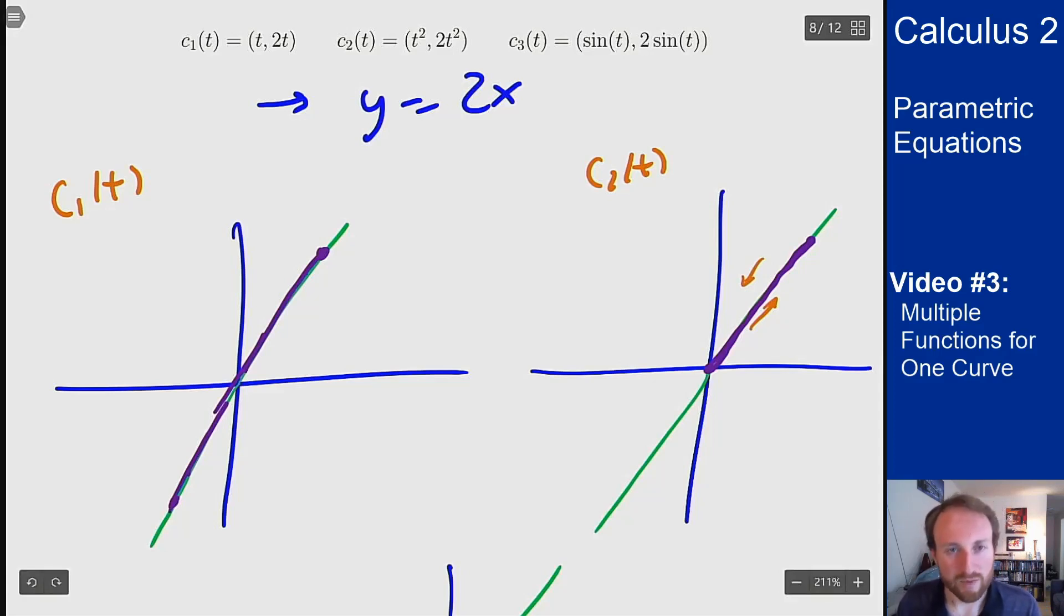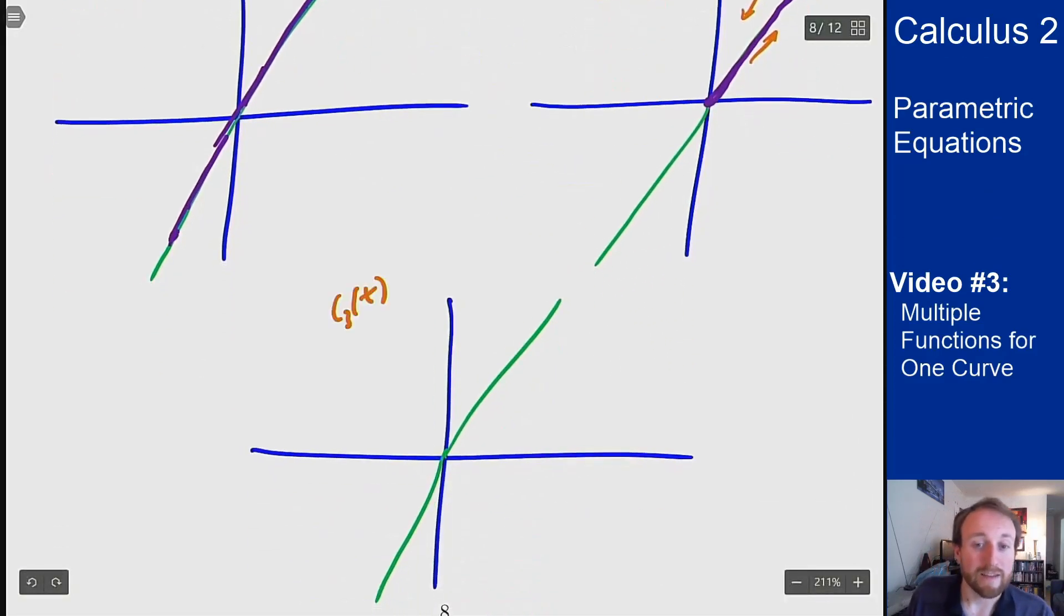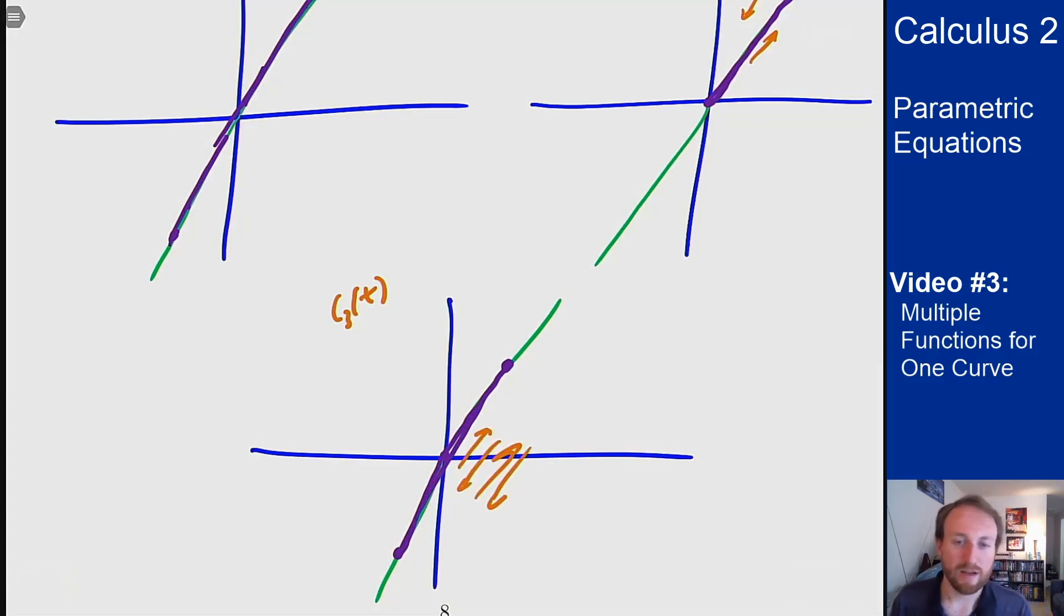For the last, we have c₃(t) = (sin t, 2 sin t). Since sine is always between -1 and 1, when I draw this curve starting at 0, I'll start at the origin, go up to 1, backtrack, hit -1, and backtrack again. I keep oscillating within this range, never getting beyond x = ±1 because sine can't exceed those bounds.